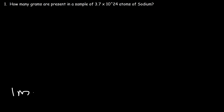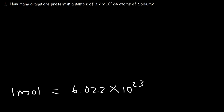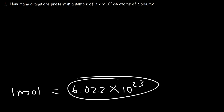One mole is equal to 6.022 times 10 to the 23. That's Avogadro's number. When you think of a dozen, a dozen represents 12. So a mole is simply a large quantity of something. A mole of calculators is this many calculators.